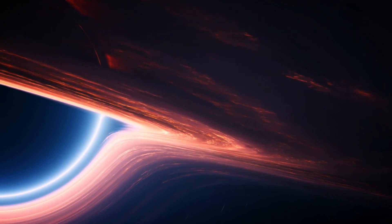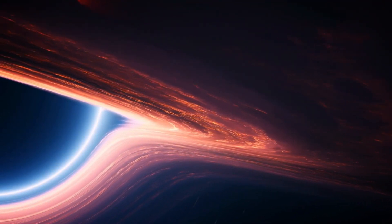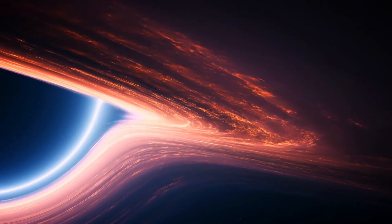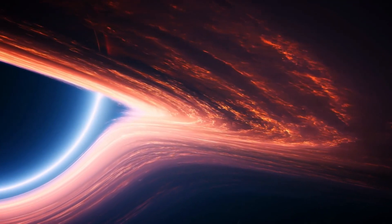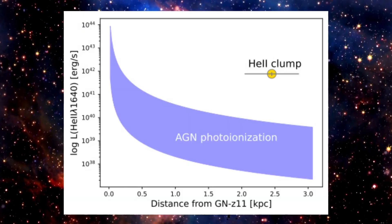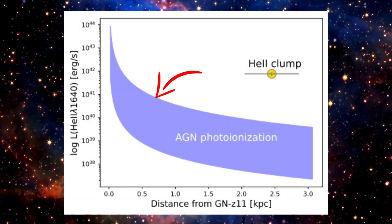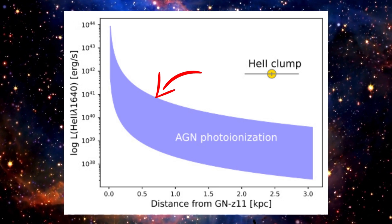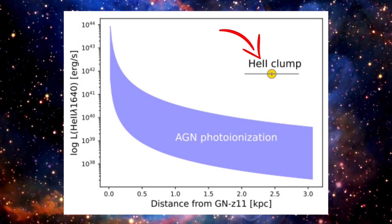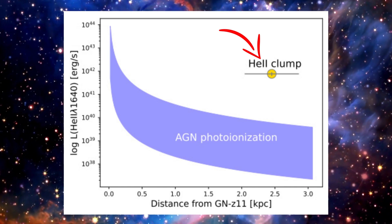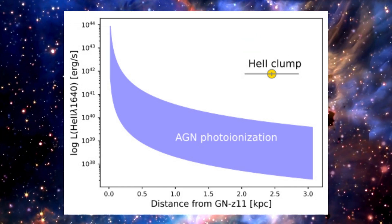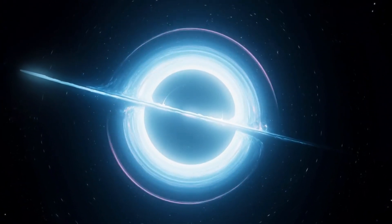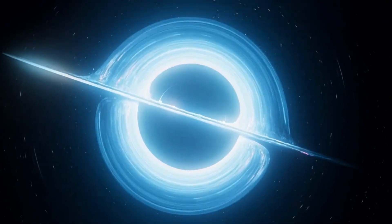While a supermassive black hole is a possibility, modeling suggests that the emitted energy from the region surrounding a supermassive black hole at the center of GNZ-11 would diminish significantly with distance. The purple line represents the predicted brightness based on the energy from a supermassive black hole, while the yellow marker indicates the actual observed brightness of the helium clump at that distance from GNZ-11. It therefore appears unlikely that a supermassive black hole is responsible for ionizing the helium clump. The remaining explanation points to Population 3 stars forming in the halo of gas around GNZ-11 as the source of ionization.